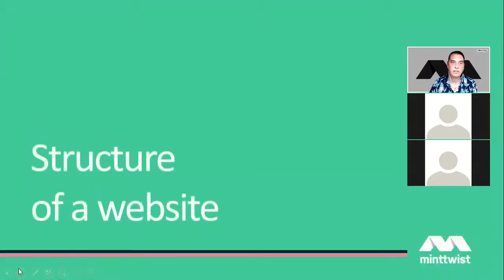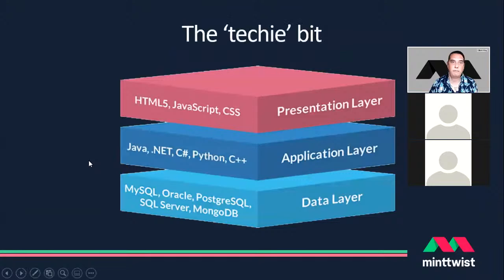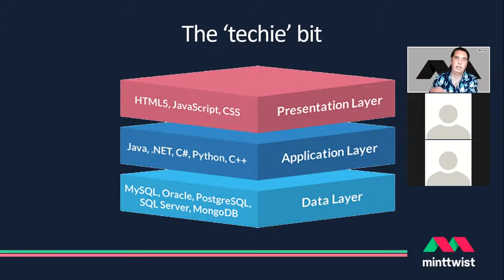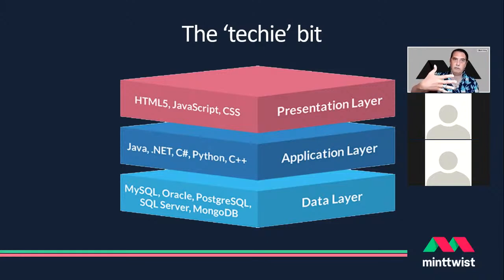Before we dive into the main content, let's get the technical stuff out of the way. Most websites these days are built on what's called a three-tiered architecture. You have a presentation or front-end layer — when we look at a website we see nice pictures and words, and that's the presentation layer.